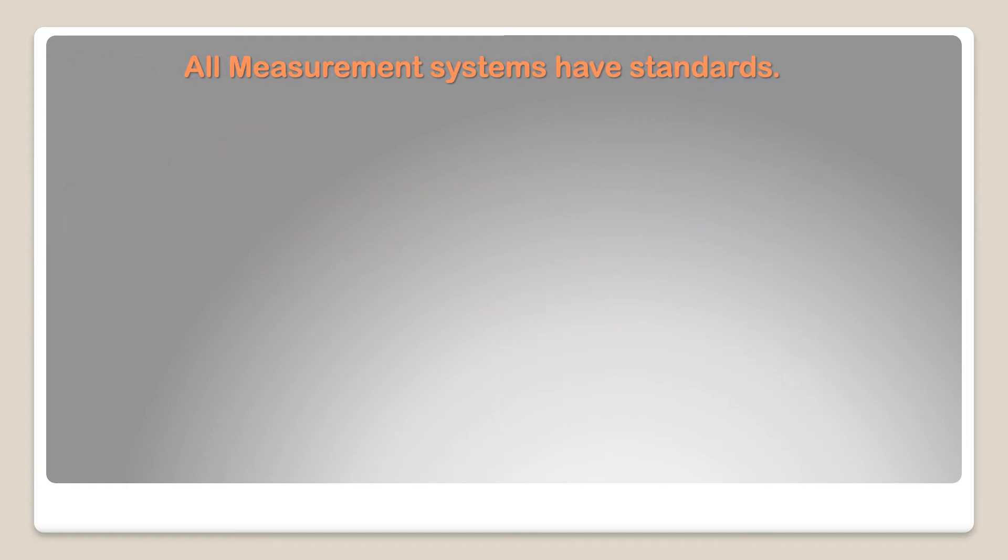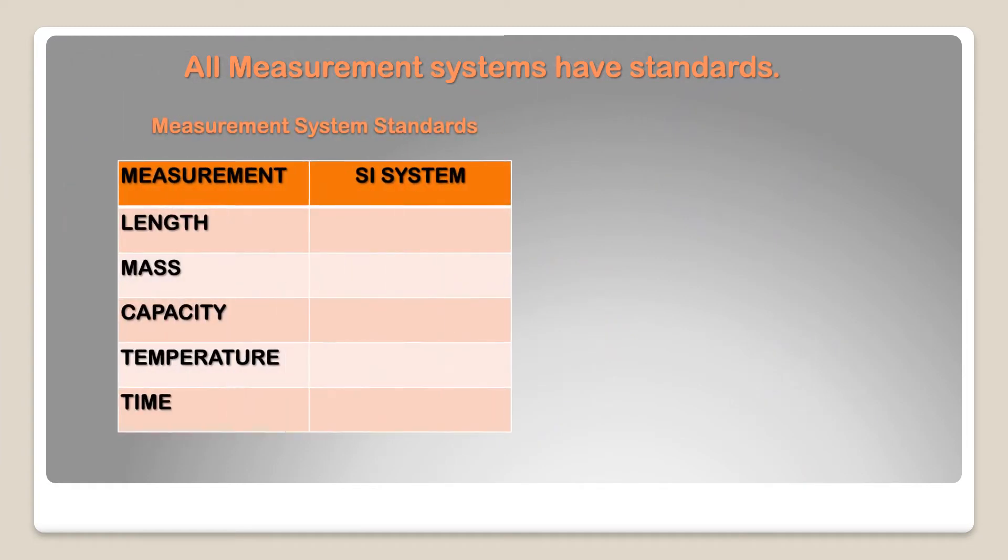All measurement systems have standards. The standard metric unit for length is meter. The standard metric unit for mass is gram. The standard metric unit for capacity is liter. The standard metric unit for temperature is Celsius, and the standard metric unit for time is second.